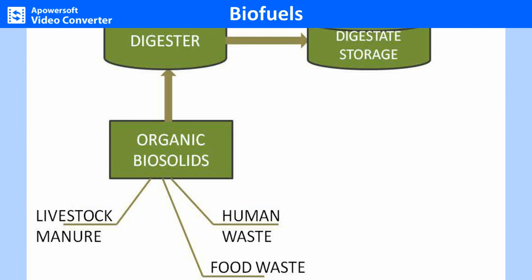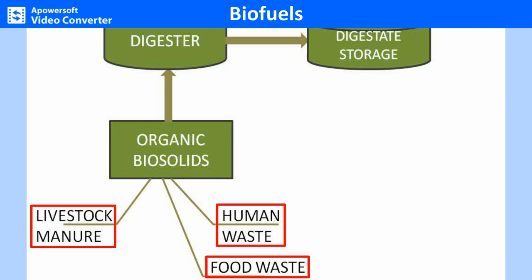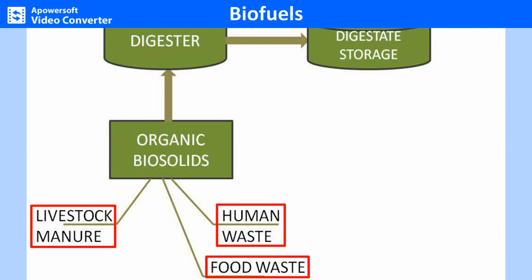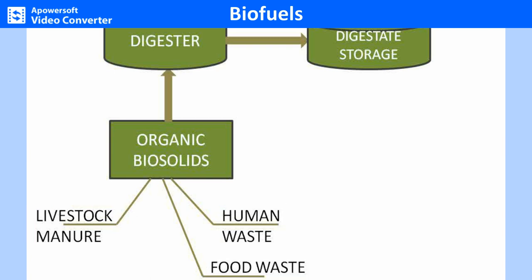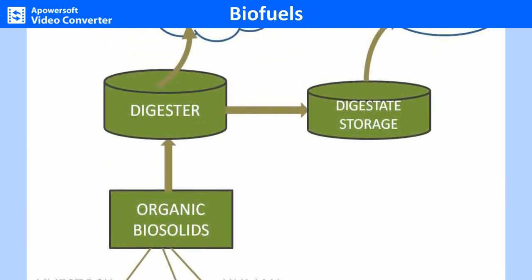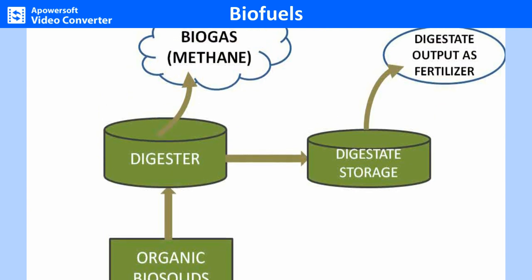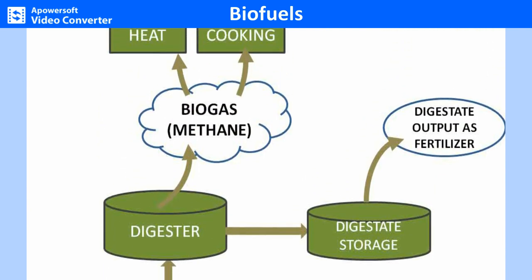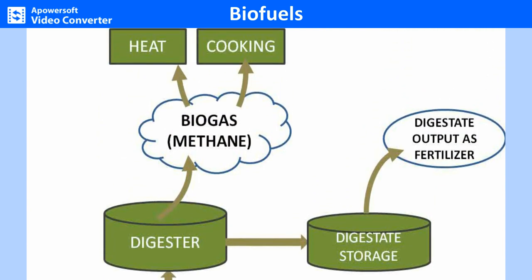Biodegradable materials like manure, sewage, municipal waste, green waste, plant material and crops are used for producing biogas. The gas is useful as a fuel substitute for firewood, dung, agricultural residues, petrol, diesel and electricity, depending on the nature of the task and local supply conditions.